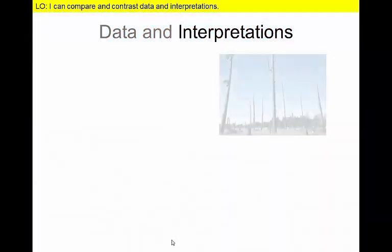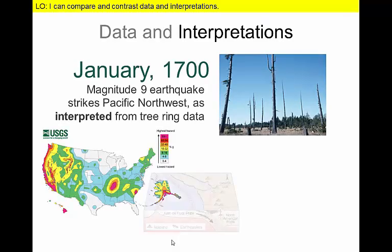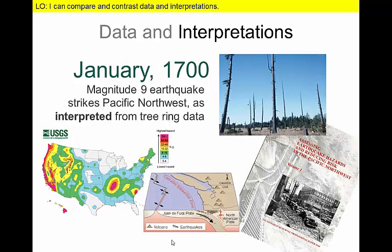We can take these different types of data and make interpretations about what happened on Earth. For example, data from a study of submerged trees along the coast of Oregon and Washington was correlated with historical tsunami records from Japan to show that the trees died when a huge earthquake occurred in January 1700. Scientists used this and other data to assess risk from future earthquake hazards.